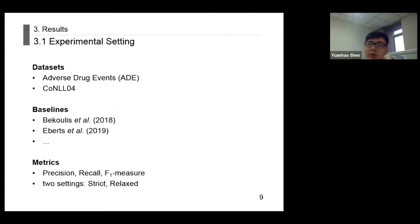Next, I will introduce the experimental settings and results. We conducted experiments on two datasets: the ADE dataset and the CoNLL04 dataset. The first dataset includes two entity types and a single relation type. The second dataset contains four entity types and five relation types.